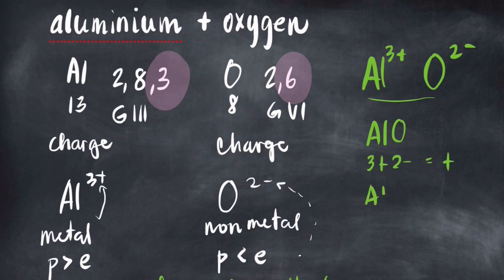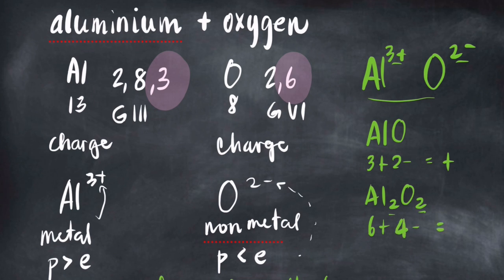What if we do Al₂ and O₂? Three plus times two gives you 6+; two minus times two gives you 4−; the overall charge is 2+. That cannot be either. So we have to find a combination where the charges add up to zero.